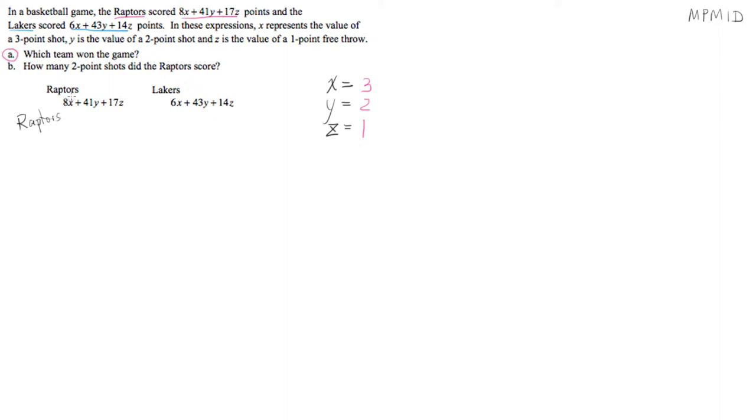Well we've got eight somethings, 41 somethings, and 17 somethings. Well what are those somethings? They're three-point shots, two-point shots, one-point shots. Thankfully those values were given to us in the question. So we're going to find out how much is eight three-point shots plus 41 two-point shots plus 17 one-point shots. We're going to replace the letter X with its value. That's called a substitution. Replace the letter Y with its value, replace the letter Z with its value. 8 times 3 is 24, 41 times 2 is 82, 17 times 1 is 17. Add all that up and through the magic of science and mathematics, 123. Their point total was 123 that game.